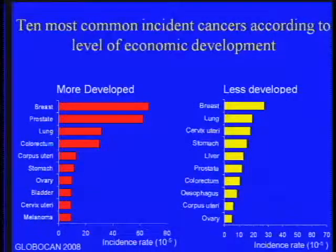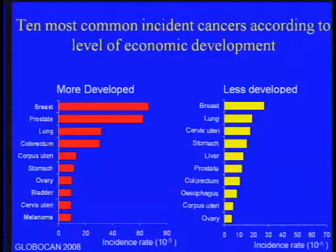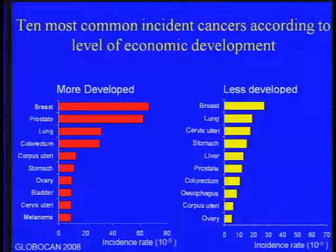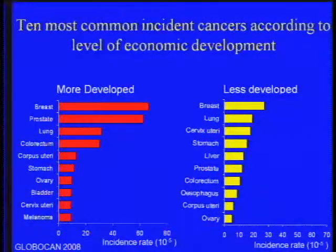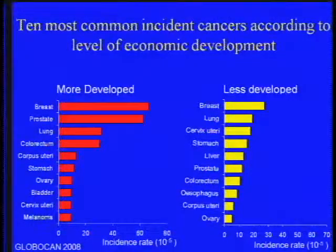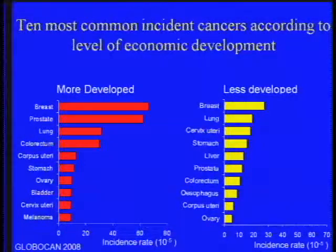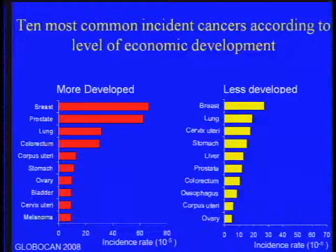This slide shows the ten most common incident cancers according to level of economic development. In more developed countries, breast, prostate, lung, and colorectum are the most common. In less developed countries, historically the infection-related cancers — cervix, stomach, and liver — would have been at the top, but already breast and lung cancer have passed them, and prostate and colorectum are moving up.